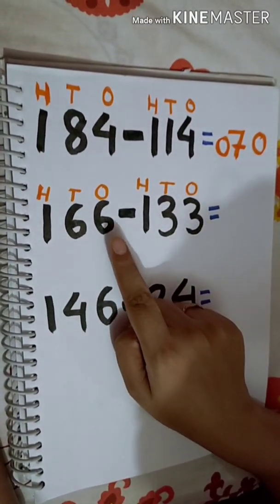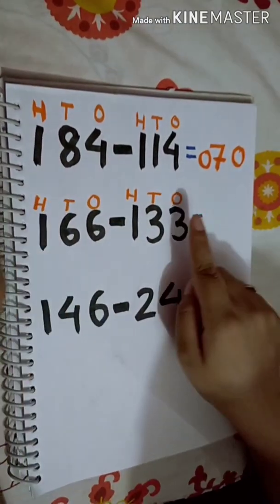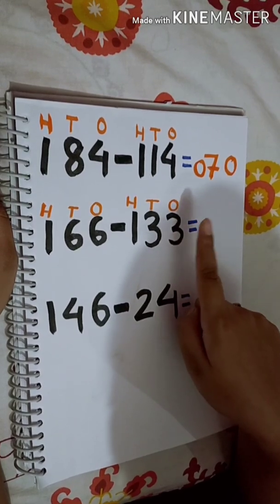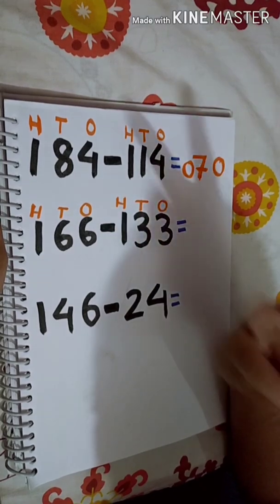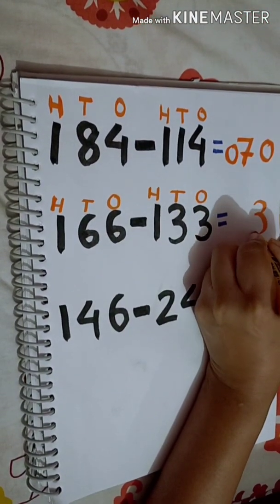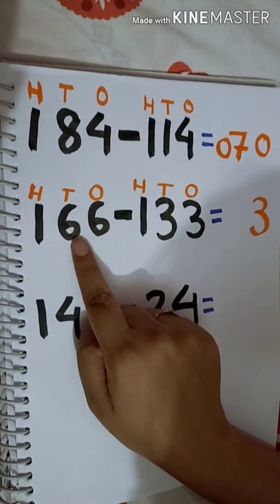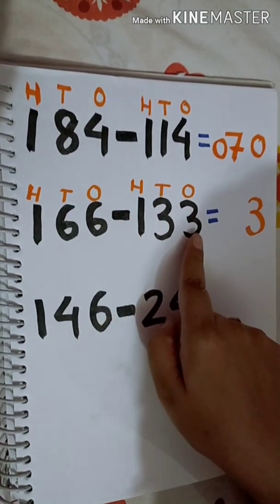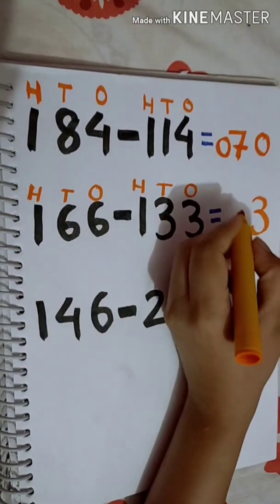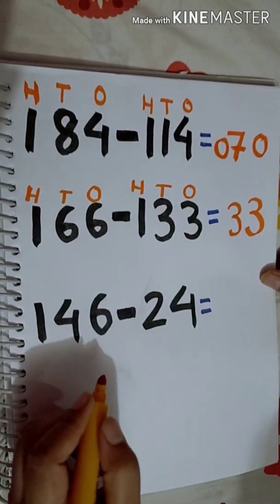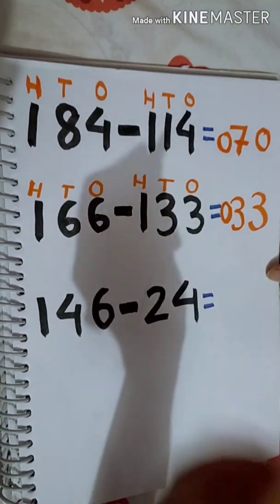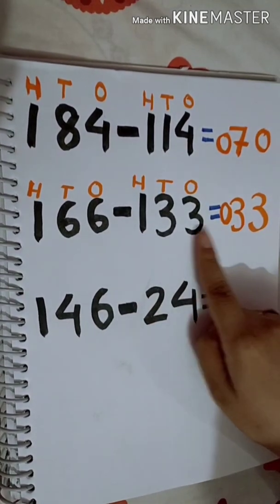First, I will subtract the 1's digit: 6 minus 3. Number 3 is smaller, so I will count after 3 up to 6 — 4, 5, 6 — using 3 fingers. So 6 minus 3 is equal to 3. Now subtract the 10's digit: 6 minus 3 again, which is equal to 3. Then subtract the 100's digit: 1 minus 1 is equal to 0. So 166 minus 133 is equal to 33.